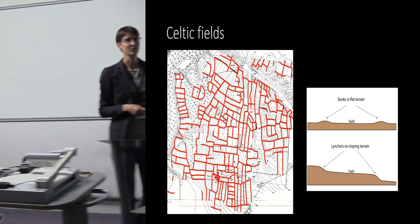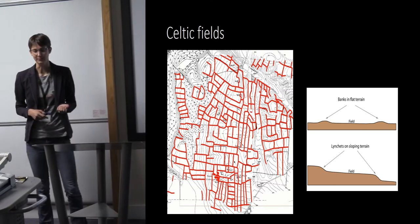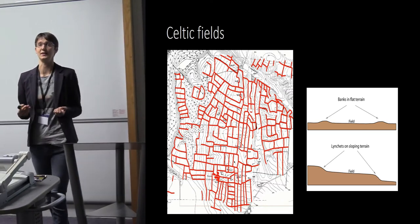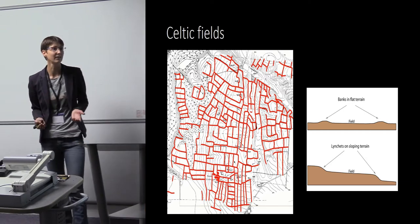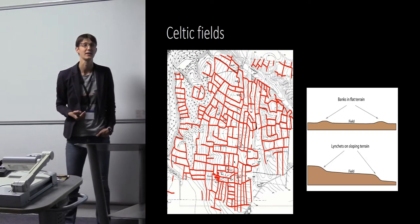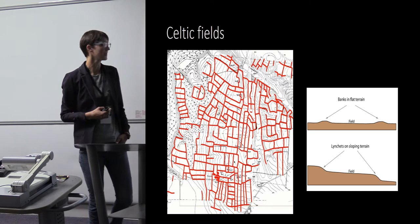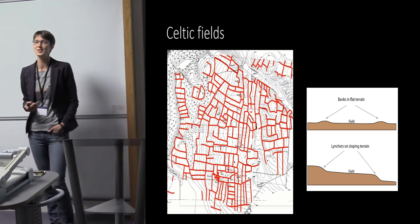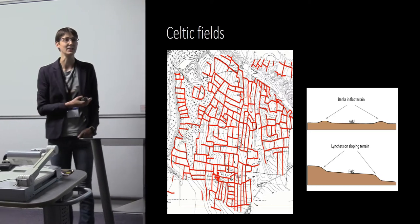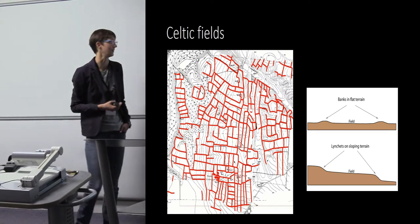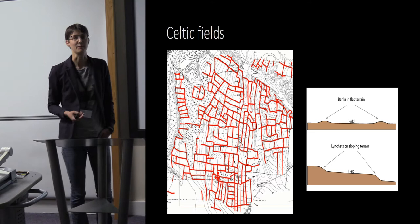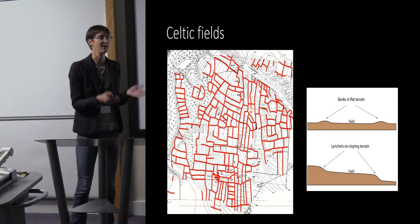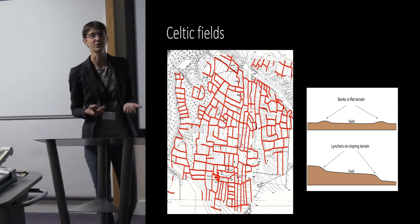In some areas these field systems were covered by heathland or woodland after abandonment, which means that in marginal areas today we can still find these field systems preserved in the landscape. This means we can actually go out there and sample directly from the prehistoric field systems.